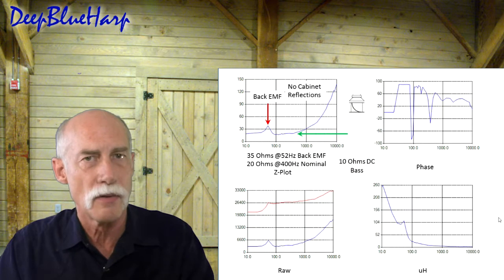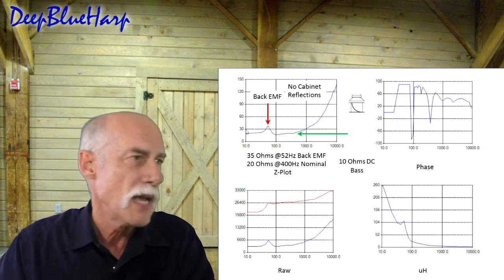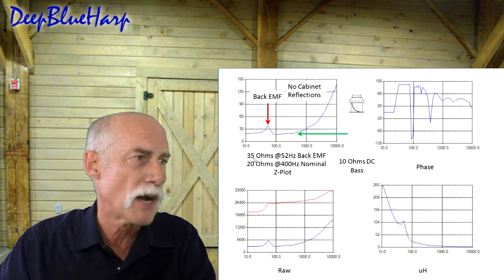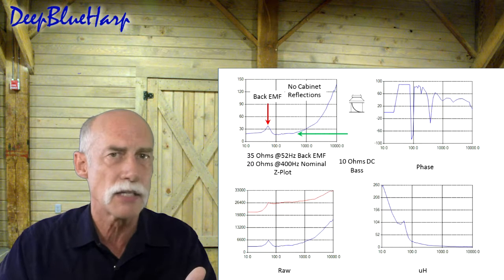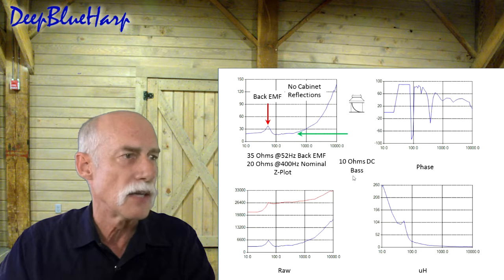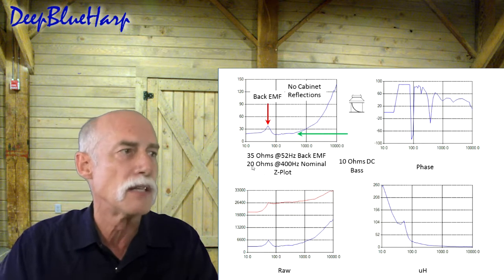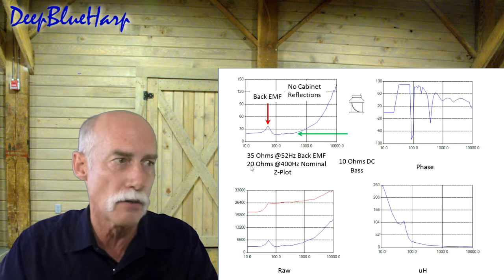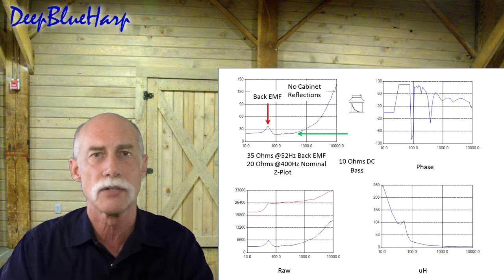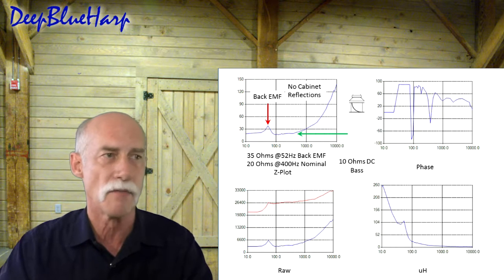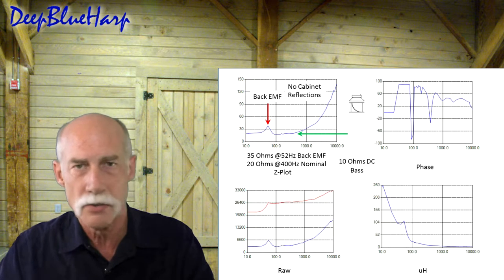I measured the low frequency filter first, the bass speaker. It has a back EMF about 35 ohms at 52 hertz, very characteristic of a bass speaker. It has a 10 ohm DC nominal resistance, but the nominal impedance is 20 ohms at 400 hertz. There are no cabinet reflections. Perfect. This is a very standard graph. No news here.